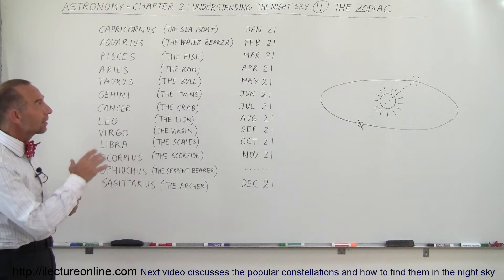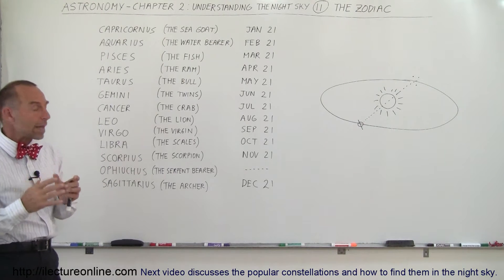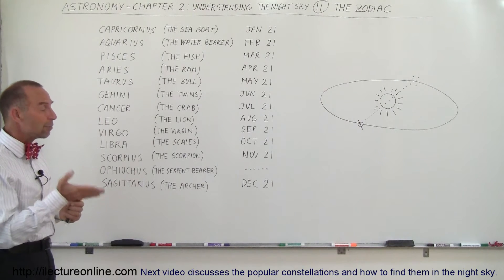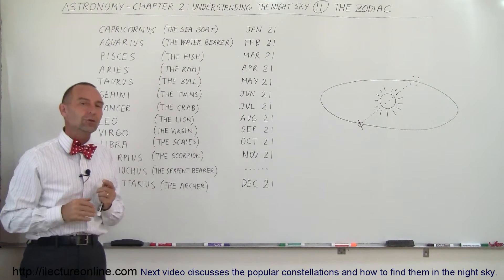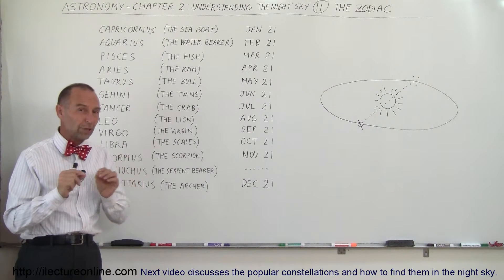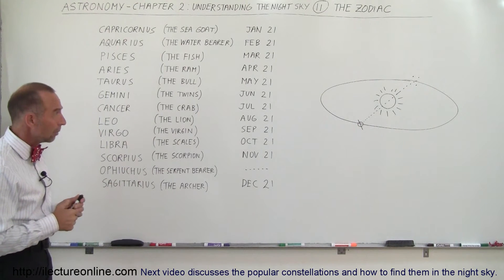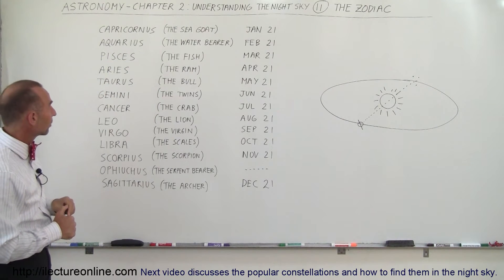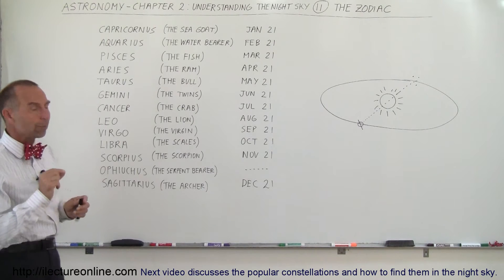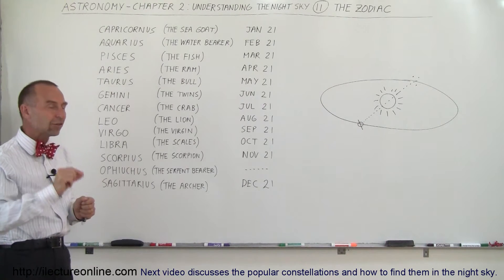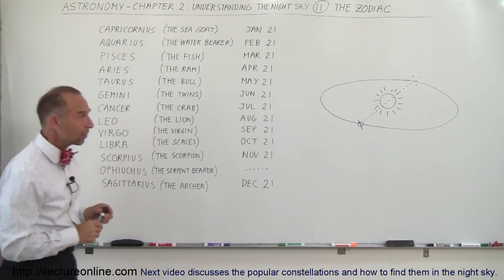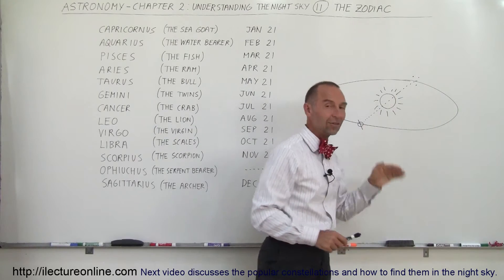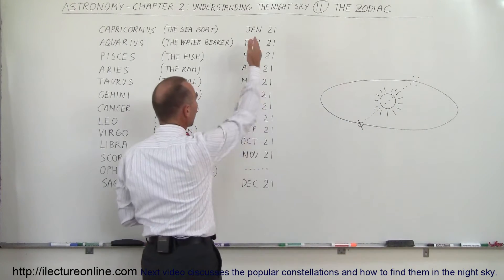It turns out that the constellations that make up the Zodiac — there are 13 of them. There should only be 12 really, but there are 13 because every one of them relates to a period of about a month during the year. Notice the dates associated with the various Zodiac constellations. It has to do with the position of the Earth, the Sun, and the constellation. When the constellation is directly behind the Sun — completely blocked by the Sun — that's the date associated with it.